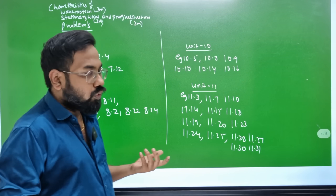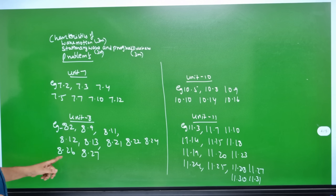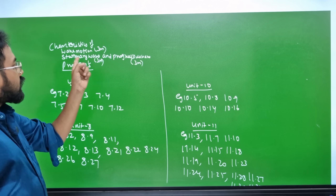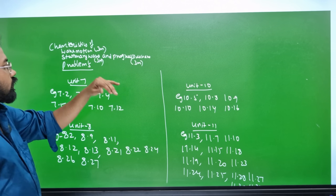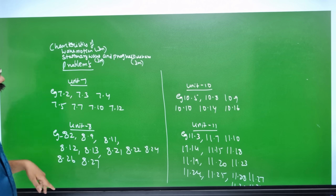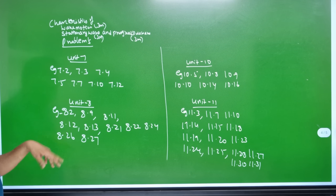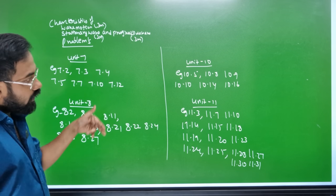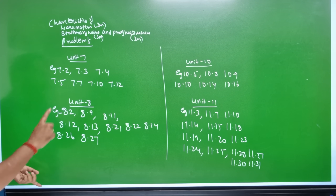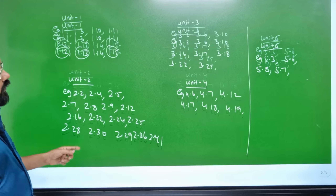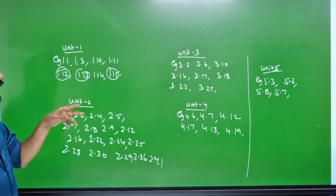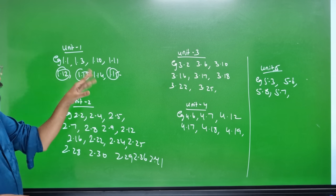This is Unit 11. Unit topics in the second volume include wave motion with 6 cadres, stationary wave and progressive wave for 3 and 5 marks. Problems in Units 7 and 8 from Volume 2, along with Units 10 and 11, cover all components. Unit 1 is easy and carries 5 marks.